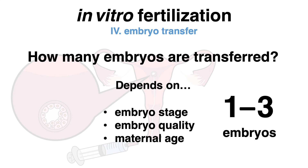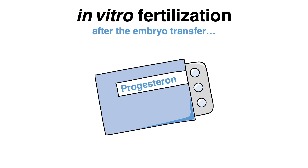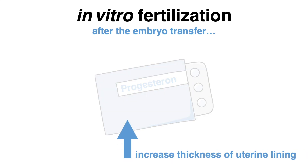After the transfer, progesterone may be prescribed — a hormone that increases the thickness of the uterine lining, which should improve the chances that the embryo will attach to it and grow.